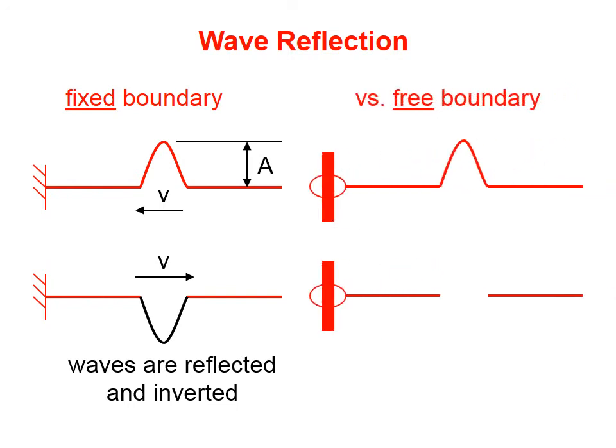The other type of boundary is a free boundary, and we've tried to model that here by imagining this thick red line on the left as being a pole.